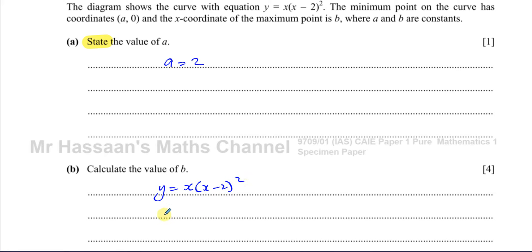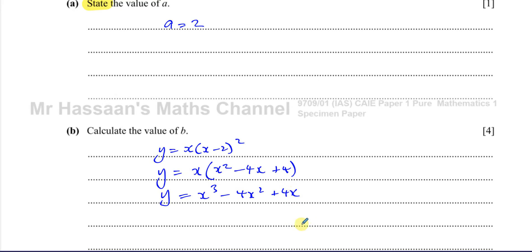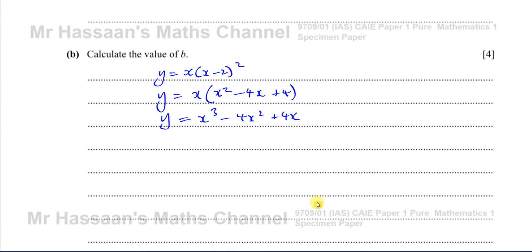We have to first expand the equation in order to differentiate it properly. We expand (x minus 2) squared: squaring the first term gives x squared, multiplying the two terms gives minus 4x, and squaring the last term gives plus 4. So fully expanded, it is y equals x cubed minus 4x squared plus 4x.